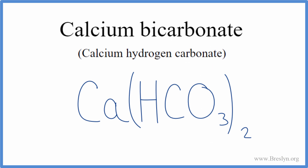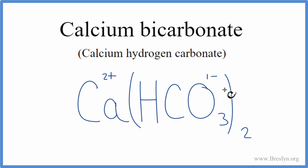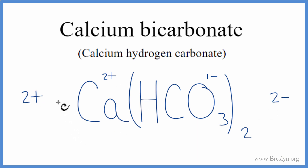Let's check our work to make sure we got that right. Calcium was 2 plus, and the hydrogen carbonate was 1 minus. We have two of these polyatomic ions, and each one is 1 minus — 2 times 1 minus equals 2 minus. And 1 times 2 plus equals 2 plus. So 2 plus and 2 minus cancel out, giving a net charge of 0. This is the correct formula for calcium bicarbonate.